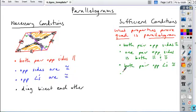What about diagonals? Amy? Good. If the diagonals of a quadrilateral bisect each other, that's enough to show that it's a parallelogram.